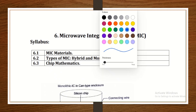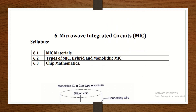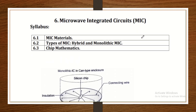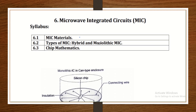Hello friends, my dear students. Now we are moving towards the last module of our syllabus, that is Microwave Engineering EXTC SEM 7. The topic is Microwave Integrated Circuits, or MIC for short. In this module, MIC material is covered, types of MIC, hybrid MIC and monolithic MIC, and chip mathematics — meaning the fabrication of MIC involves which parameters and technical terms.